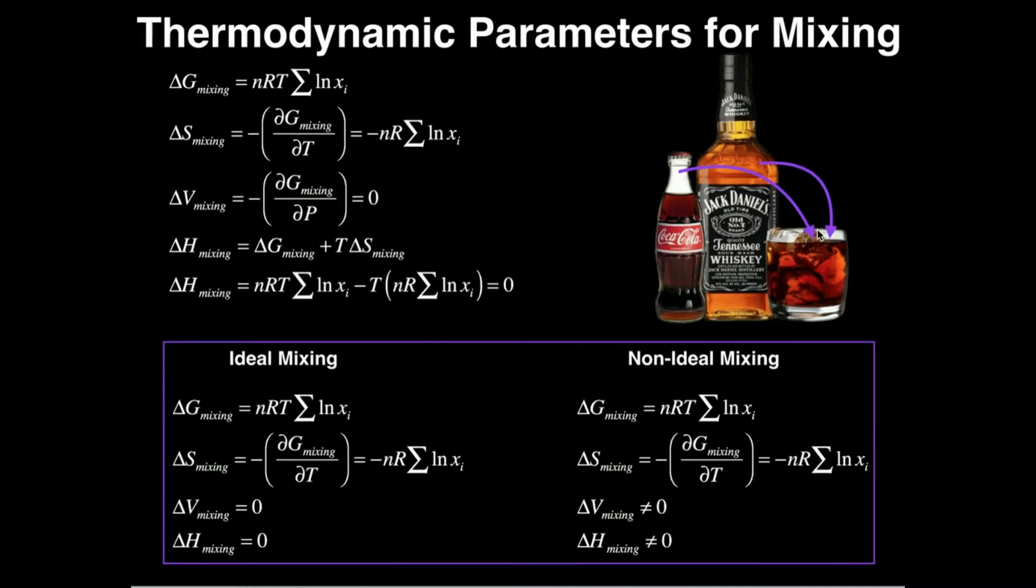When we mix these two solutions or mixtures together into the master mix, we have certain thermodynamic parameters that can be used to describe the process, and some of them mean exactly what you would think they mean. Since we're mixing two things together to make a conglomerate, we usually put a subscript here on any one of these thermodynamic parameters that just says mix, and you'll abbreviate it as mix.